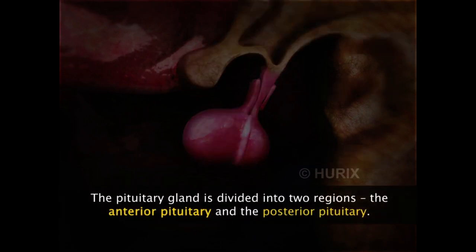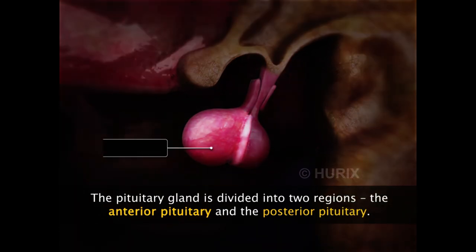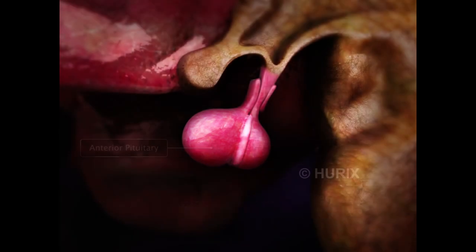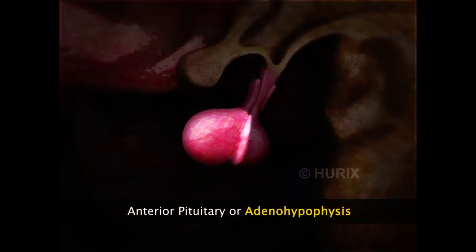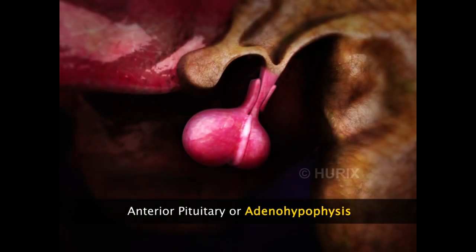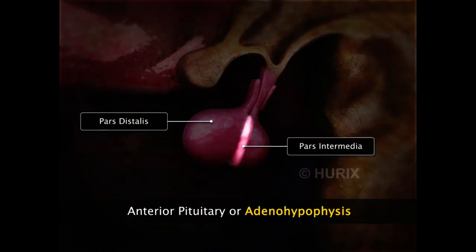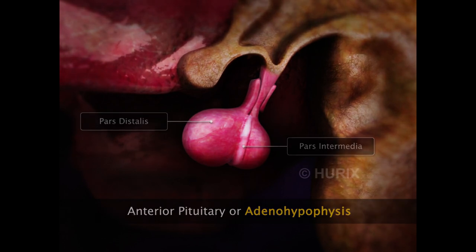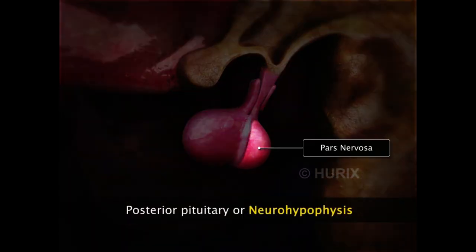The pituitary gland consists of two components: the anterior pituitary and the posterior pituitary. The anterior pituitary, also known as the adenohypophysis, is further divided into two regions: pars distalis and pars intermediae. In humans, the pars distalis is almost fused with the pars intermediae. The posterior pituitary gland is also known as the neurohypophysis. It consists of one lobe, the pars nervosa.